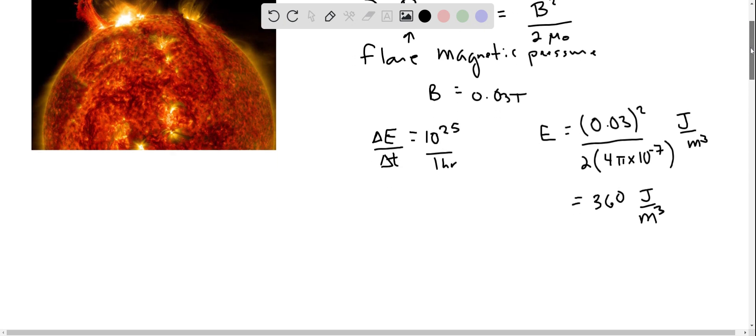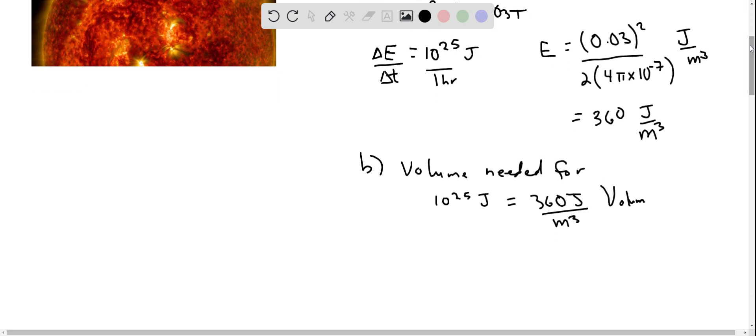Now we can actually figure out the volume associated with the energy release in the flare. So we had energy is 10 to the 25th joules, and that is 360 joules per cubic meter times the volume. So solving for the volume, we find the volume of flare is quite huge, 2.8 times 10 to the 22 cubic meters.